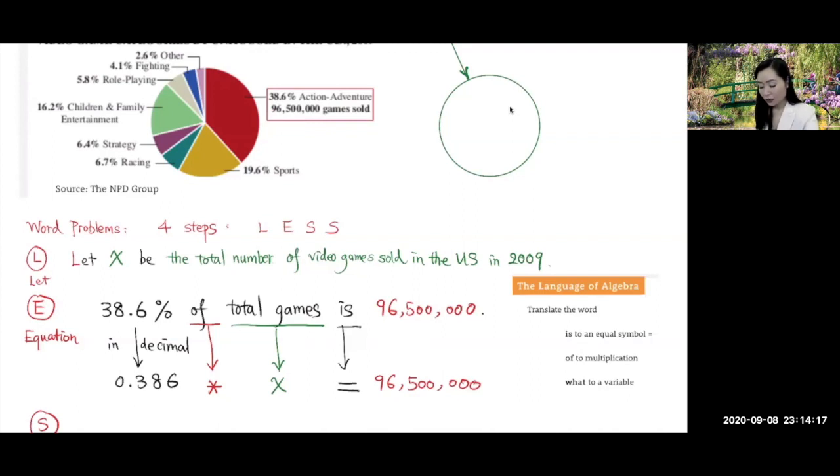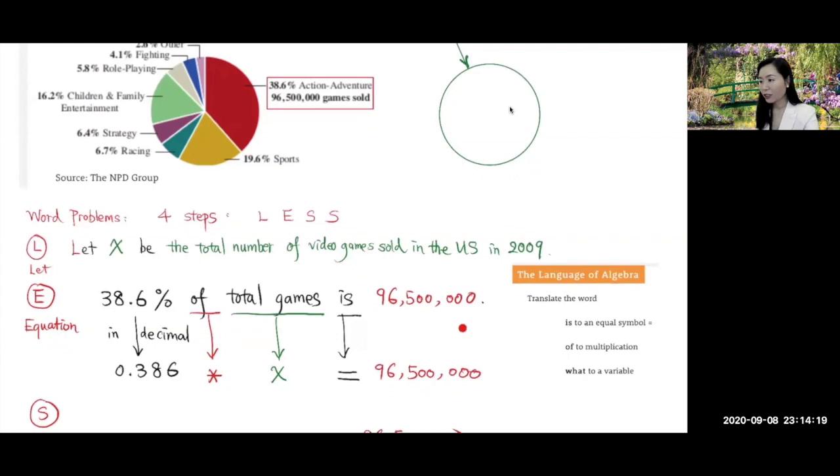So we can translate this into an equation. 38.6 percent, we will write that in decimal. It's better to write percentages in decimal. So in decimal, that's 0.386. Of translates into multiplication. The total number of games is what we're looking for, which is X.